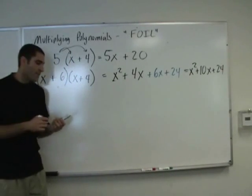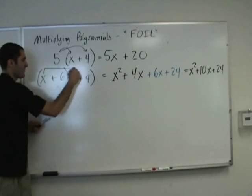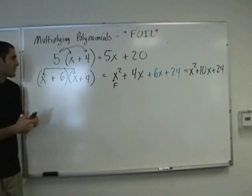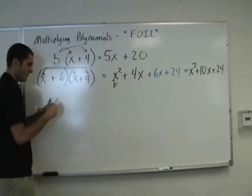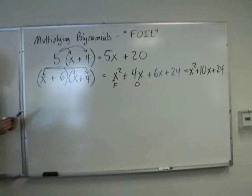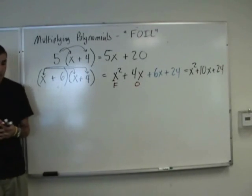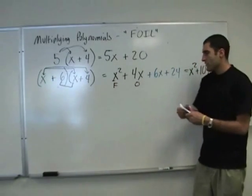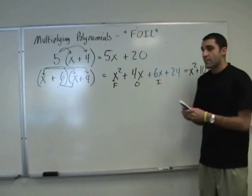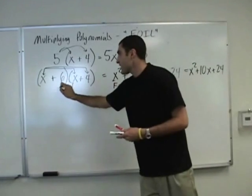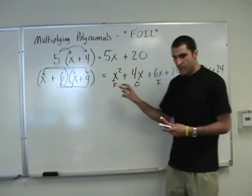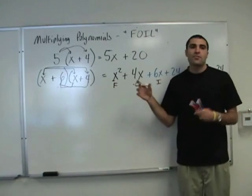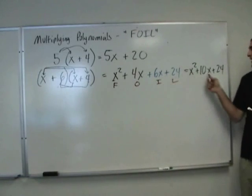The reason they call it FOIL is the following. You multiply the First terms — that's F. Then you multiply the Outer terms — that's O. Anyone know what I is? Inner — those are the inside terms; notice 6 and x are both on the inside, so multiply those two. And finally, L stands for Last — 6 and 4 are both the last terms, giving us 24. A big hint: the O and the I usually combine, like they do here to make 10x.